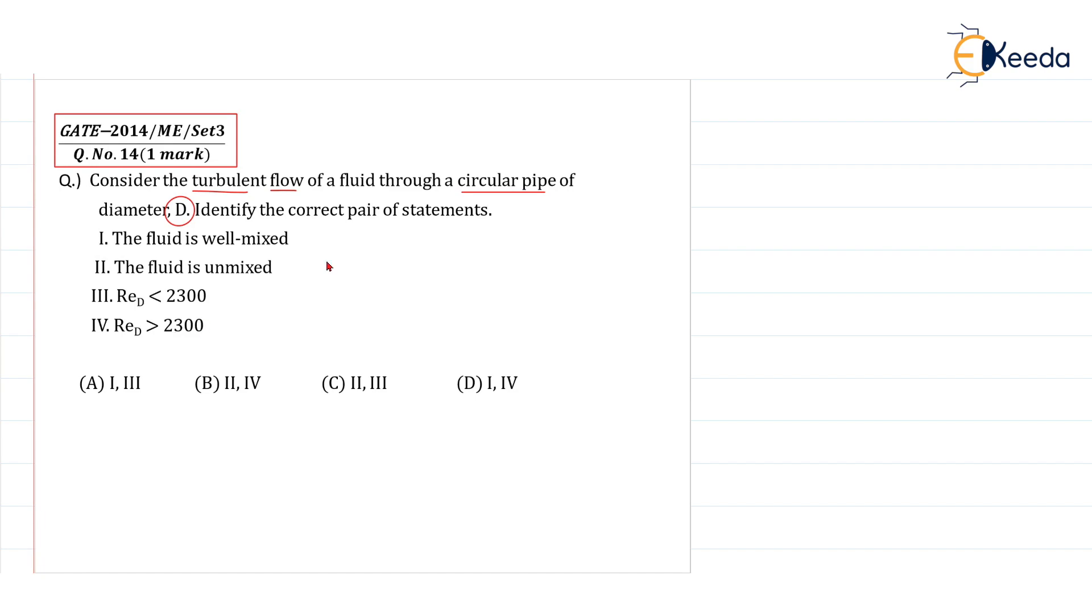So first of all, for turbulent flow, we know that generally Reynolds number should be greater than 4000. And if Reynolds number is less than 2000, that is a laminar flow. And this is turbulent flow.